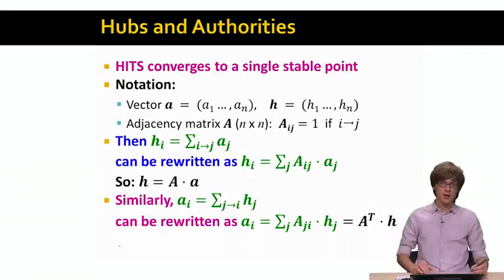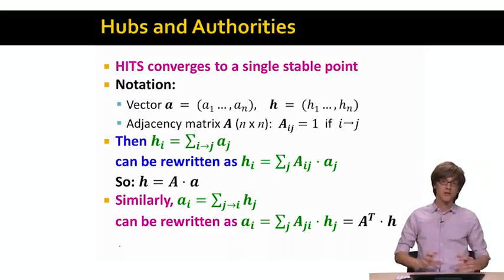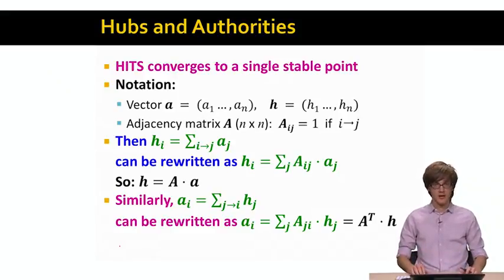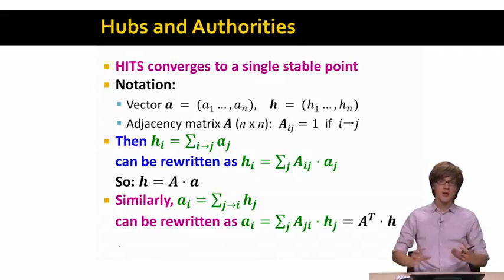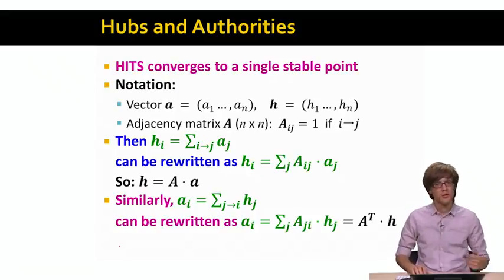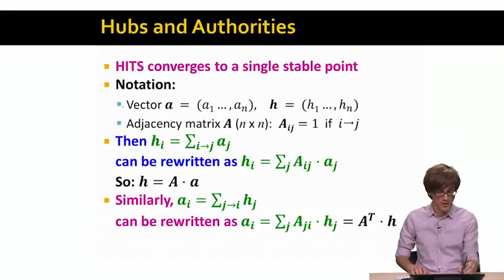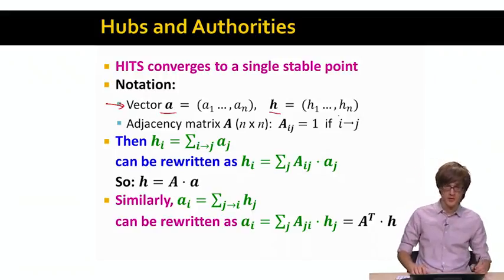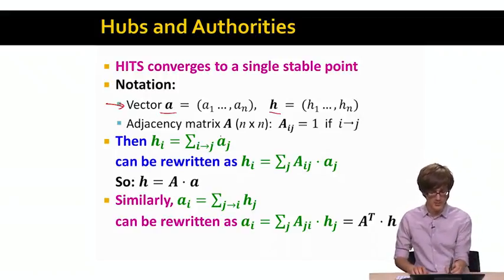Interestingly, we can express hub and authority scores in a matrix formulation. Similar to PageRank, where PageRank scores correspond to the leading eigenvector of matrix A, the hub and authority scores also correspond to leading eigenvectors, but of a different matrix. The way HITS works: we have vector A for authority scores, vector H for hub scores, and the adjacency matrix A where A_ij equals one if node i points to j and zero otherwise.